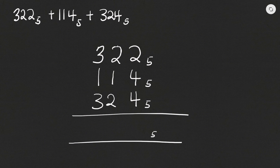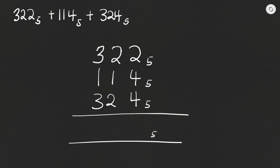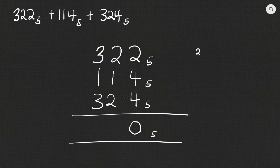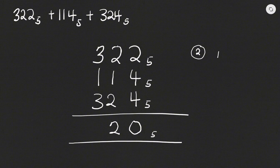So I have 322 base five, then 114 base five, then 324 base five. My answer will also be in base five. Now two plus four gives me six, plus four gives me ten. Ten is obviously greater than the base which is five, so we ask how many times will five go into ten — it will go there twice. Remainder is zero, so we write down zero and carry two. Moving to the next column: two plus one is three, plus two is five, plus the two we carried is seven. Five goes into seven once, left with two, so we write down two and carry one.